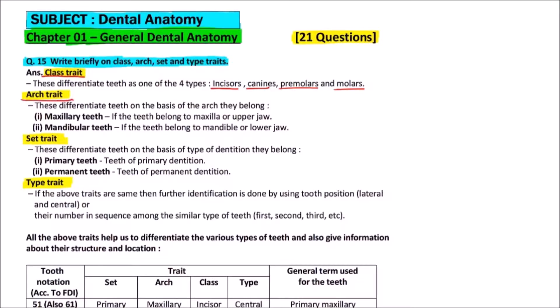Then second is arch trait. These differentiate teeth on the basis of the arch they belong. The teeth are either maxillary or mandibular based on arch trait. If the teeth belong to maxilla or upper jaw, these are maxillary. If they belong to mandible or lower jaw, these are mandibular.